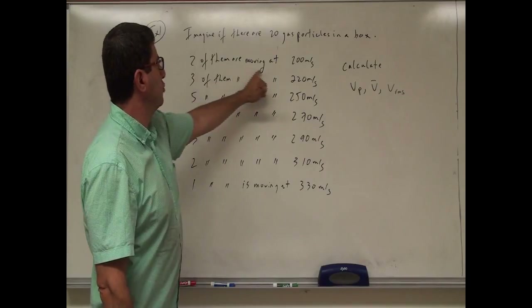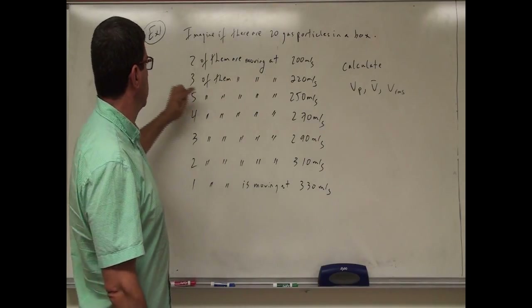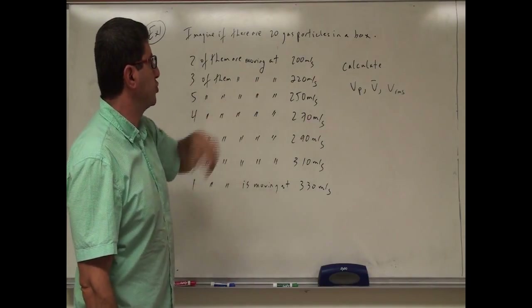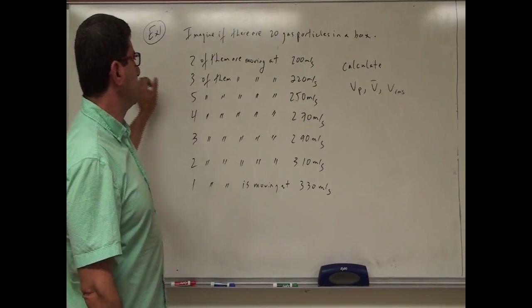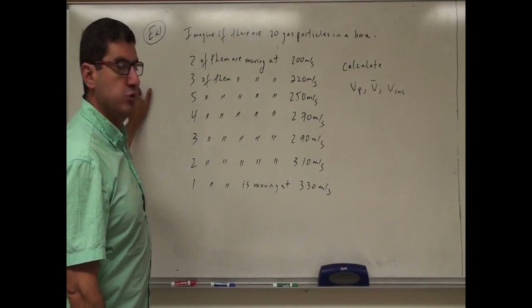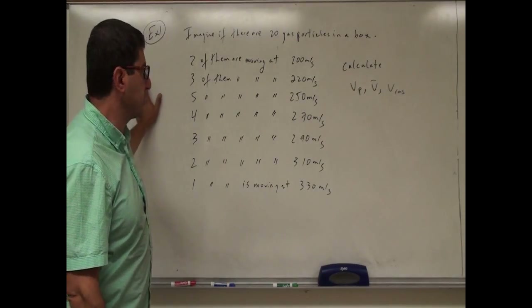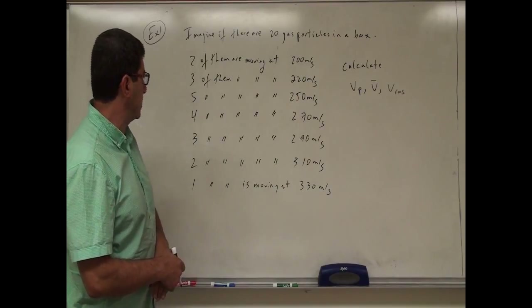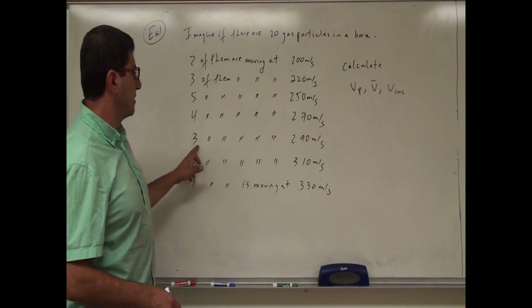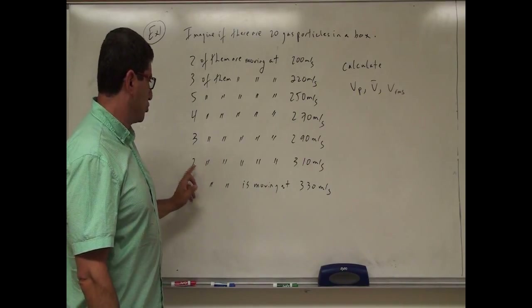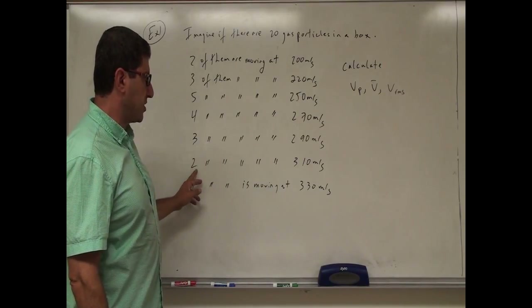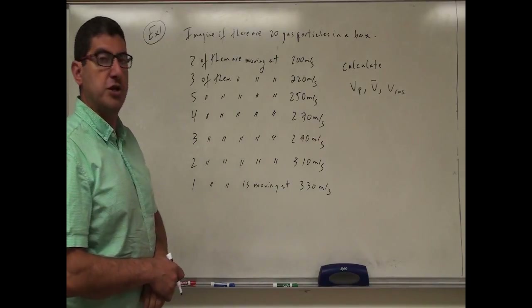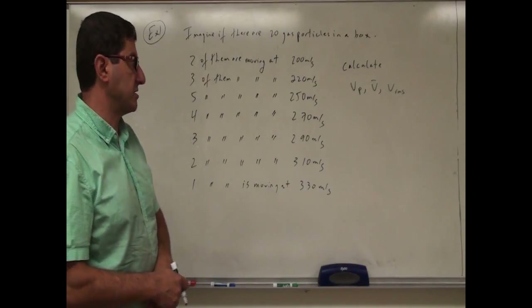Two of them are moving at 200 meters per second. Three of them are moving at 220 meters per second. Five of them are moving at 250 meters per second. Four of them are moving at 270, three of them at 290, two of them at 310, and one of them is moving at 330 meters per second.